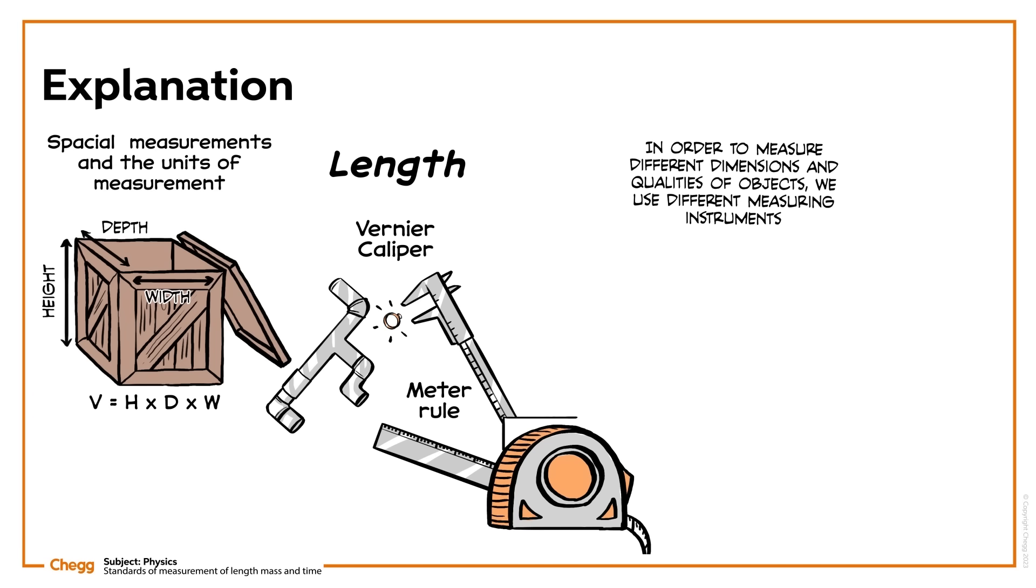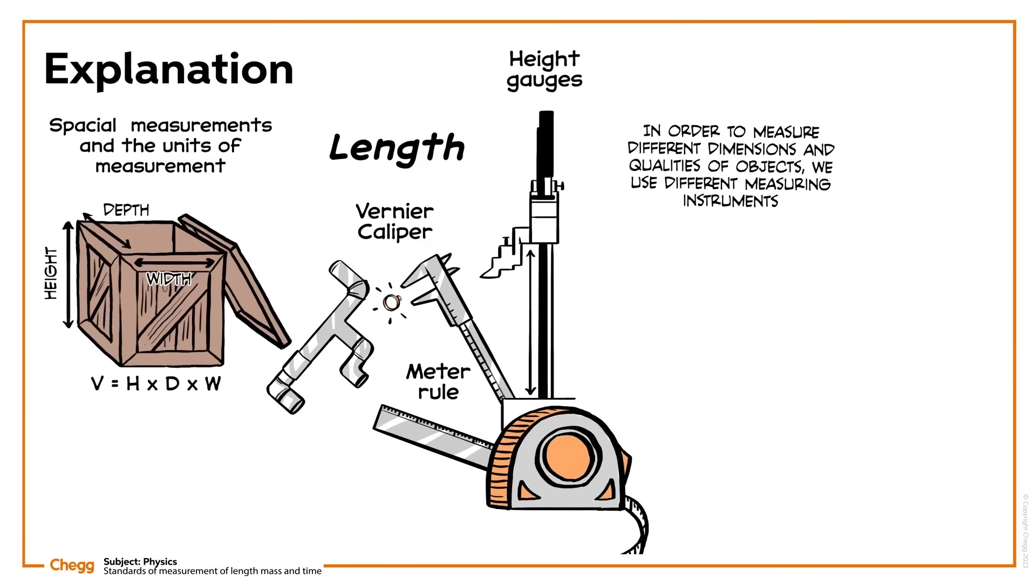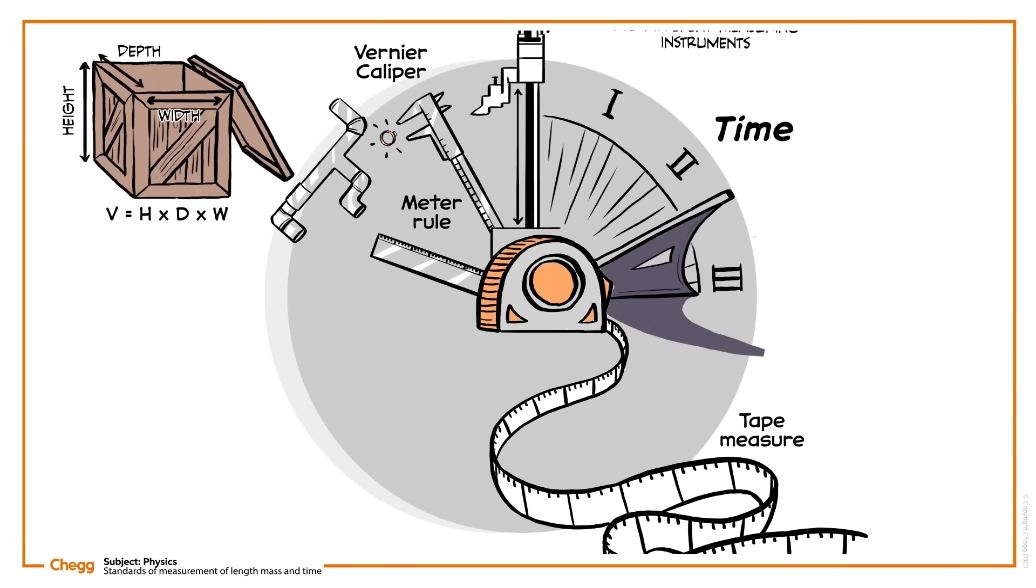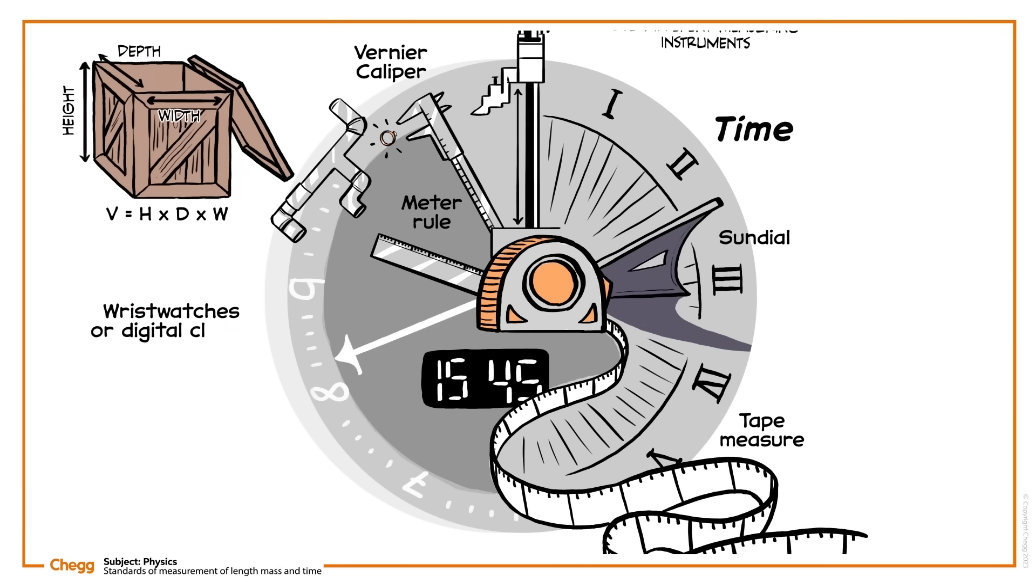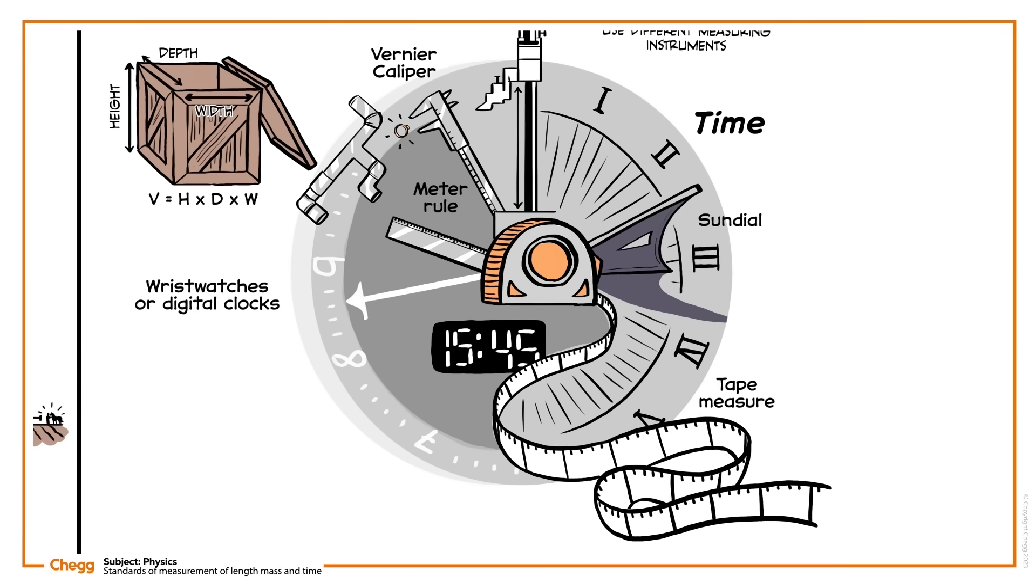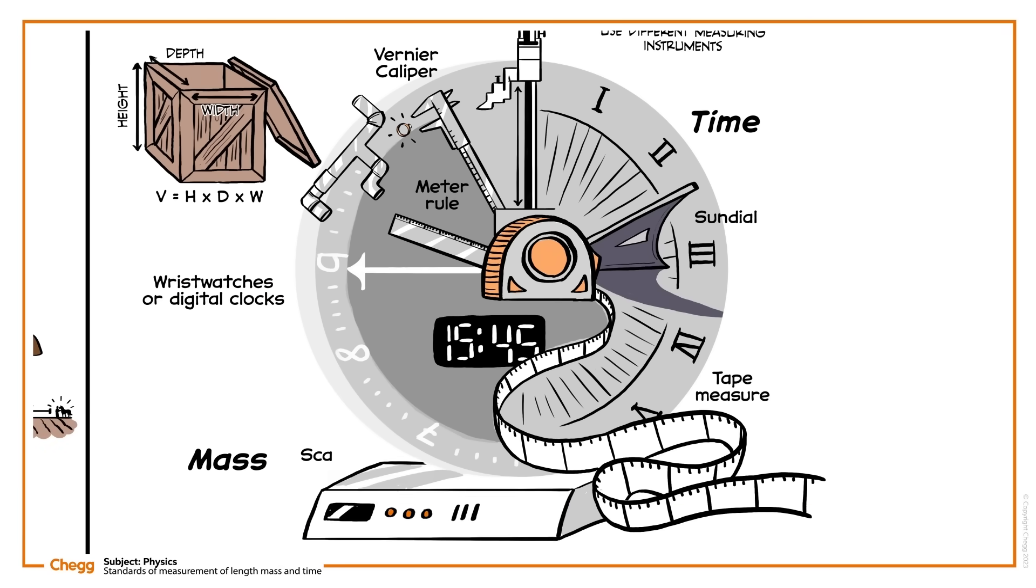If you ever want an accurate measurement of your height, you'll likely have noticed that it's difficult to get one with a tape measurer, so doctors use instruments called height gauges to measure the height of irregular objects. To measure time, we used to use the position of the sun, but now we get much more accurate measurements with wristwatches or digital clocks. When we need to measure mass, we can use a set of scales, or an instrument called a spring balance.